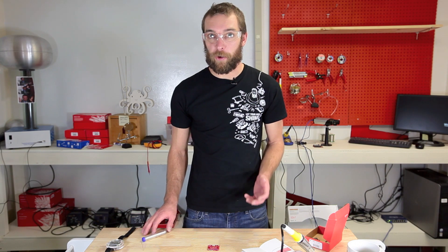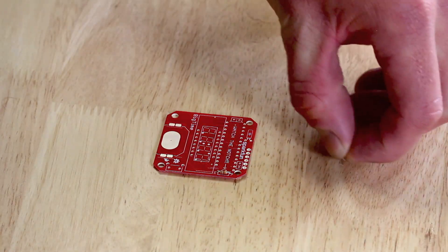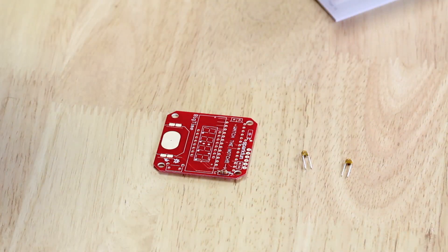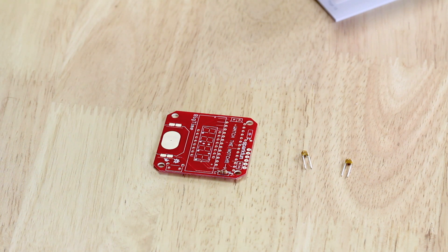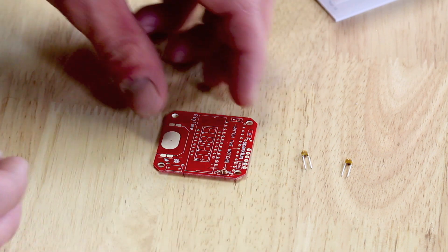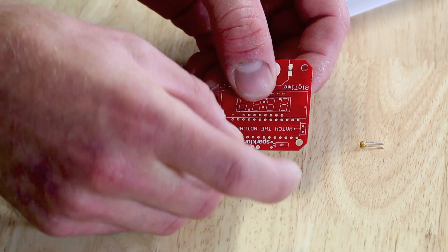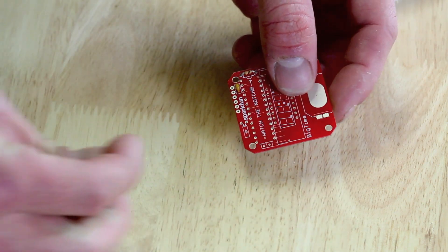Next up are the 0.1 microfarad capacitors. These are these little guys here. If you have very good eyes, you can hold them and look and it should say 104. That's just code for 0.1 microfarad. They're both the same and the polarization doesn't matter, so feel free to put them in however you'd like. They go here, right next to the SparkFun text, and here, next to the word watch.